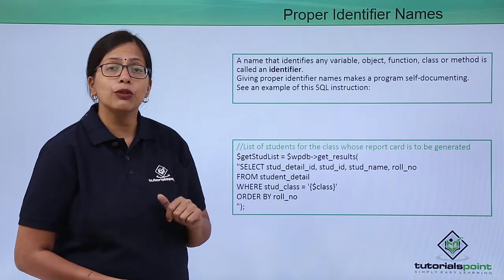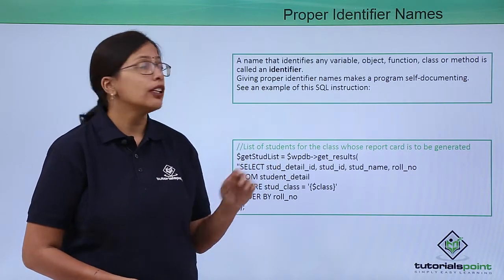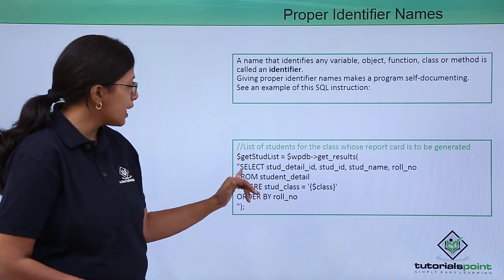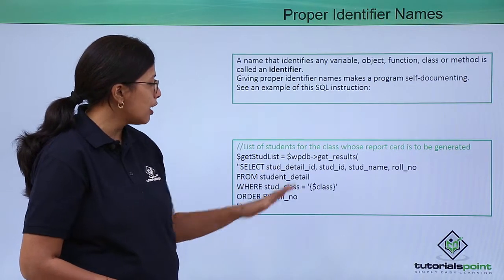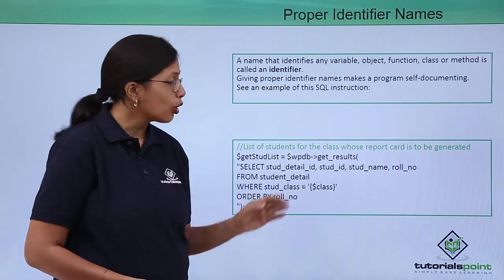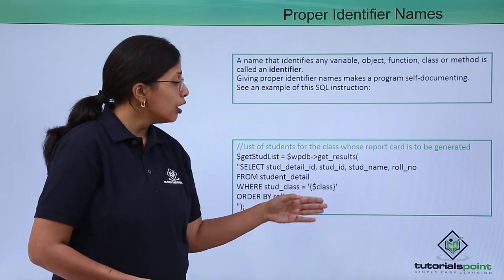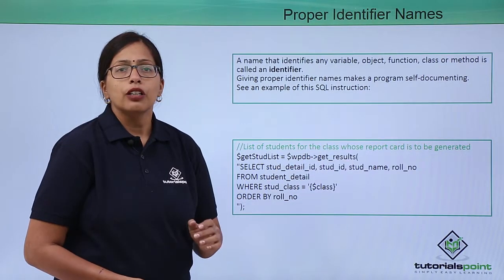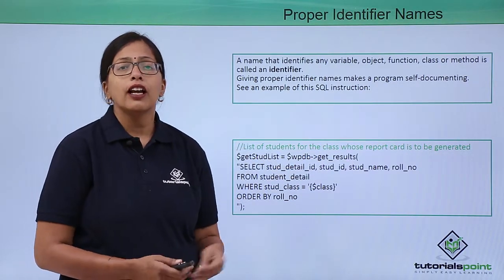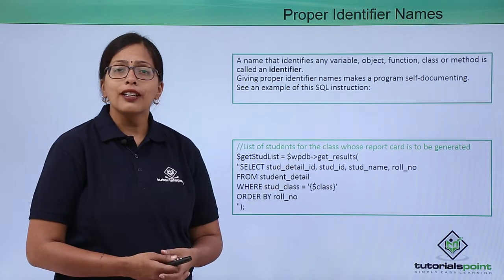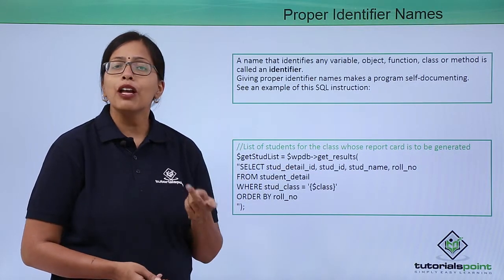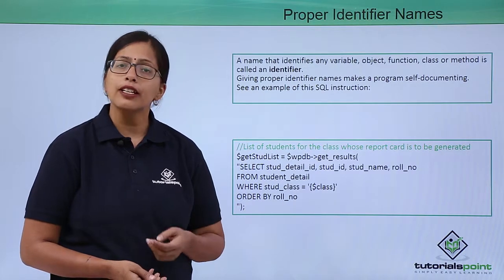Let's take a SQL example. This SQL statement says: SELECT stud_detail_ID, stud_ID, stud_name, stud, row_number. There are four variables being selected, and reading this you can understand that there are two types of IDs, a name, and a row number for the student that are being selected.